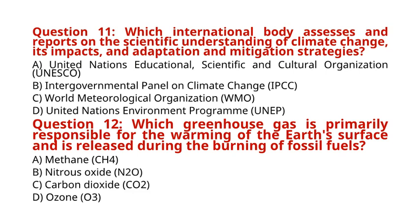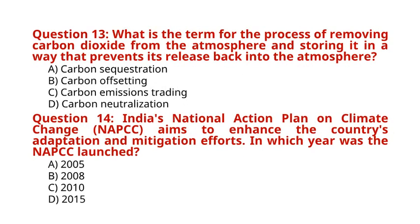Question 12: Which greenhouse gas is primarily responsible for the warming of the Earth's surface and is released during the burning of fossil fuels? Question 13: What is the term for the process of removing carbon dioxide from the atmosphere and storing it in a way that prevents its release back into the atmosphere? A. Carbon sequestration. B. Carbon offsetting. C. Carbon emissions trading. D. Carbon neutralization. The correct answer to Question 13 is option A: Carbon sequestration.